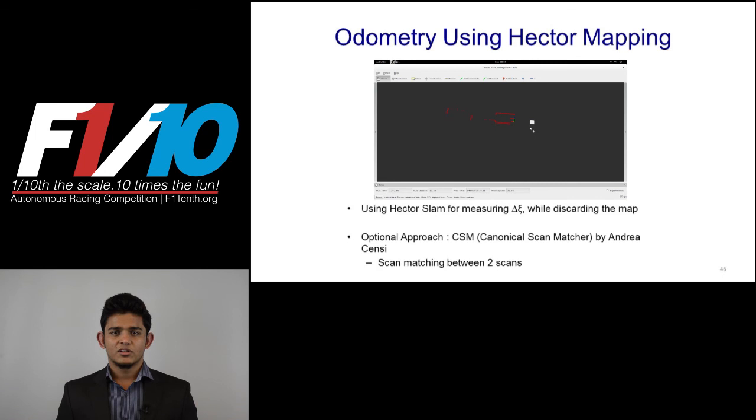Both these approaches will give odometry information. The main difference: Hector SLAM calculates the change in pose by matching the current LIDAR scan with the map generated during previous timestamp. Whereas, the CSM package does this by correlating the current scan with the previous laser scan.